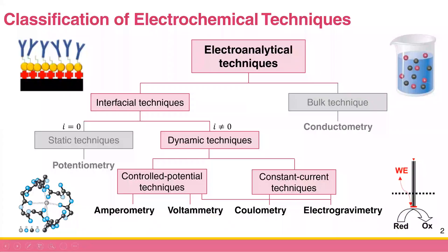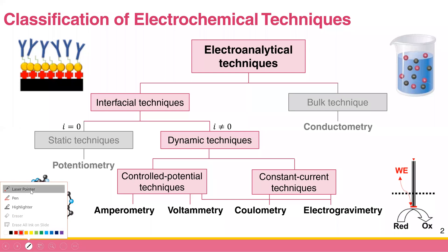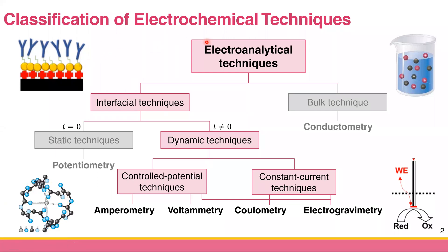What is dynamic electrochemistry? Going back to the diagram that classifies electrochemical techniques into bulk and interfacial techniques: we already talked about potentiometry, which is the static technique. Today we focus on the dynamic technique — electrochemical techniques where current flows in the cell. Dynamic techniques can be controlled-potential or constant-current techniques, including four methods: amperometry, voltammetry, coulometry, and electrogravimetry.